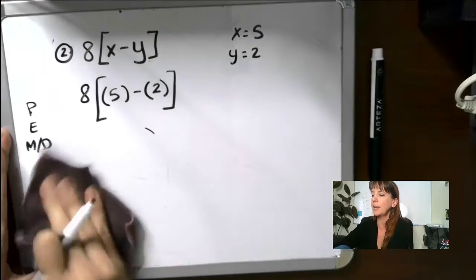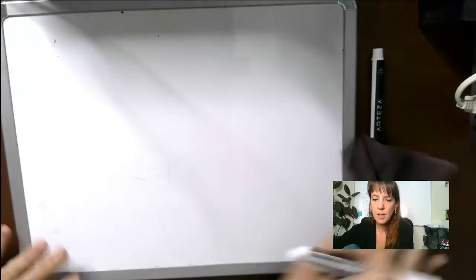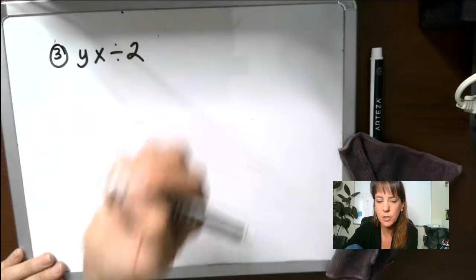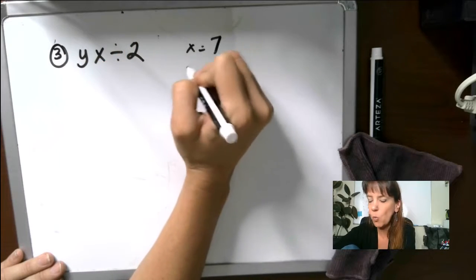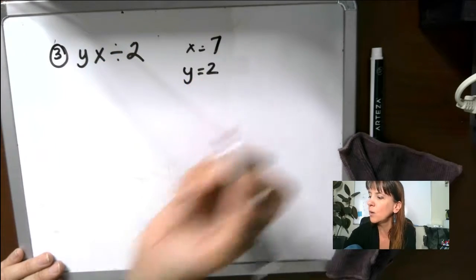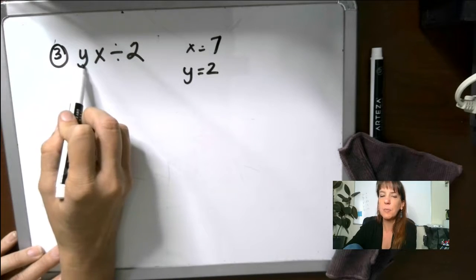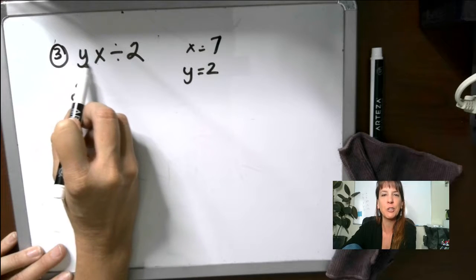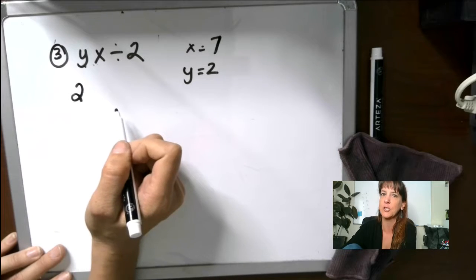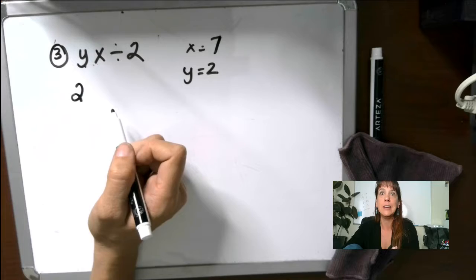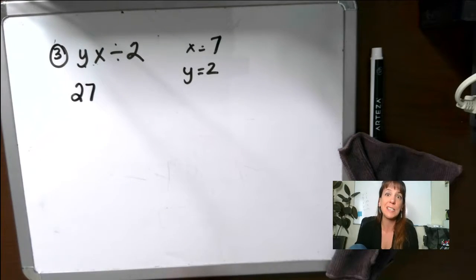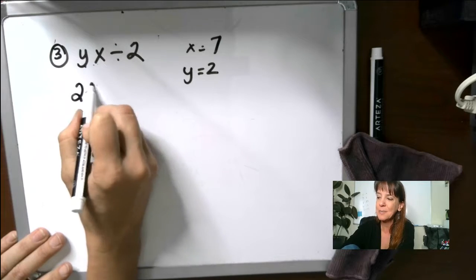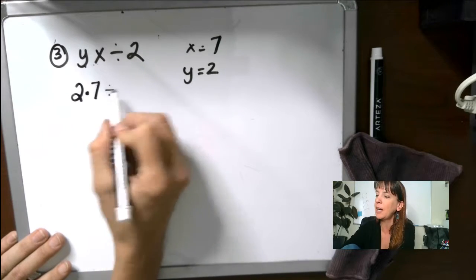All right, let's look at number three. We have YX divided by 2. X is 7, Y is 2. Excellent. So we're going to plug these numbers in right over here. 2, and again, we're lazy, right? So if there's nothing shown in between here, it's probably multiplication. We can't do that with numbers because if I wrote 2 and 7, you would think that's 27. So I have to put something in there when I'm dealing with numbers. 2 times 7, right, divided by 2.